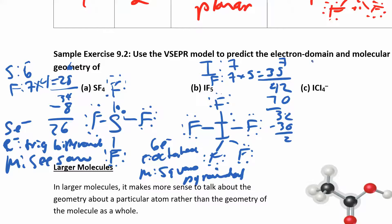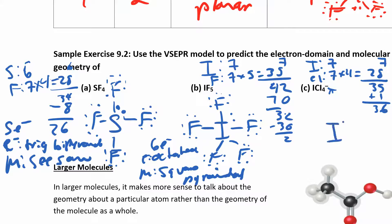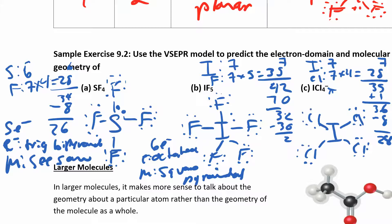For ICl4 minus, pause the video and try to draw the Lewis structure yourself. I have 28 electrons from iodine plus chlorines, and seven gives me 35 — don't forget to add that charge, giving 36. If you ever end up with an odd number of electrons, it's because you probably forgot to account for the charge. After distributing electrons, I have four left over — two on top and two on bottom. I have a total of six electron domains, the electron domain geometry is octahedral, and the molecular geometry is square planar.